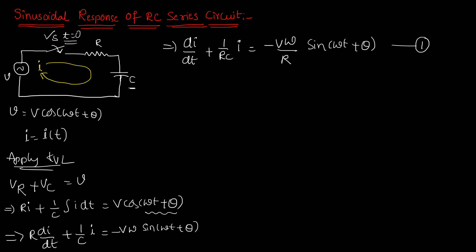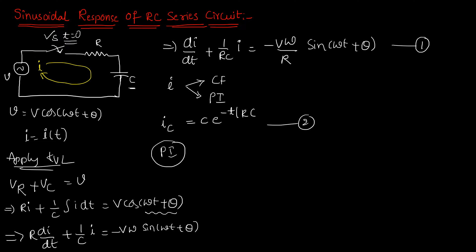If we solve this equation, the solution for current i will have two parts. The first part is called the complementary function and the second part is called the particular integral or particular solution. From basic mathematics, the complementary function will be C·e^(−t/RC). Call this equation 2.